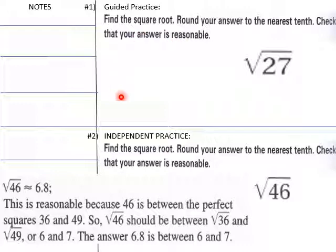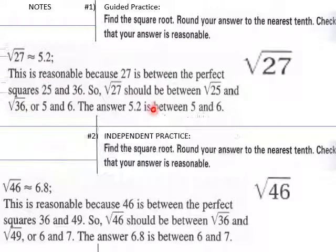I go ahead and do both here. It must be around Christmas time or something because I did both of these for you. Here's square root of 27: 5.2. It goes into the reasoning here. Between 25 and 36, so square root of 27 should be between 5 and 6. The answer 5.2 is between 5 and 6.